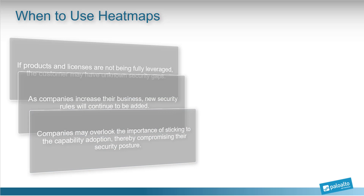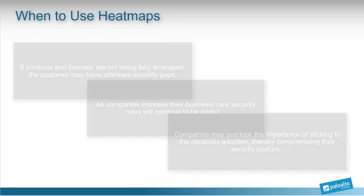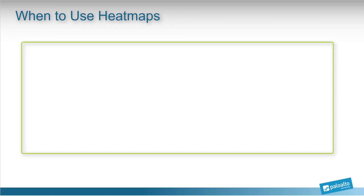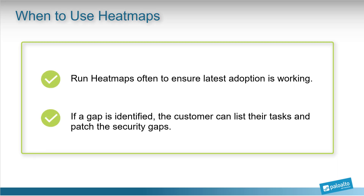In order to see if the latest adoption is working as expected or if there is a security gap, it's important to run heatmaps often based on the customer's agreed frequency. If a gap or gaps are identified, the customer now clearly knows where they are lagging in security and can list out their tasks and patch the security gaps.